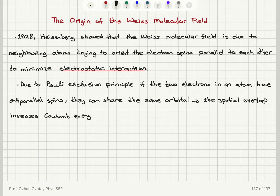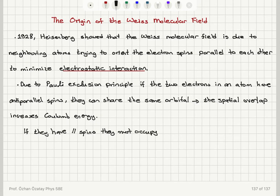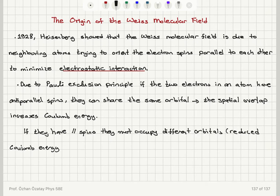Increased spatial overlap is going to increase the Coulomb energy, which is the electrostatic energy. However, if the electrons have parallel spins, they must occupy different orbitals, so this is going to reduce the Coulomb energy. Let's quantify this in a specific scenario.